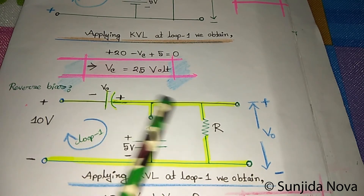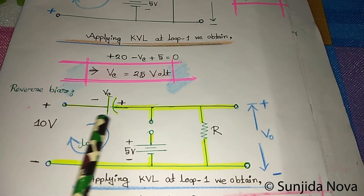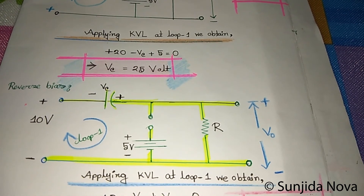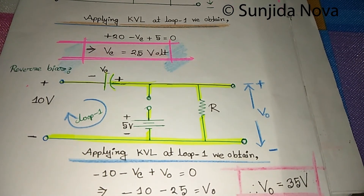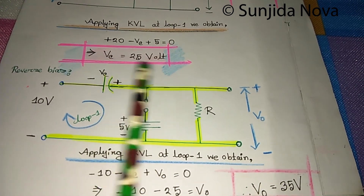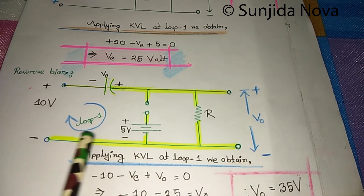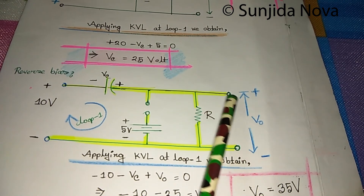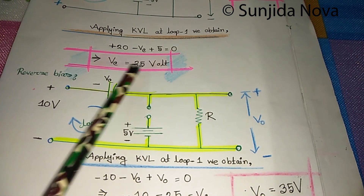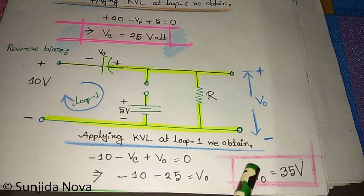Since the diode is in reverse bias, it becomes open circuit, so no current flows through that branch. Now applying KVL at loop 1, we obtain: minus 10 — because we enter from that terminal — minus VC plus V-naught equals 0. The voltage across the resistor is V-naught. Substituting VC = 25 volts into the equation, we get V-naught = 35 volts.